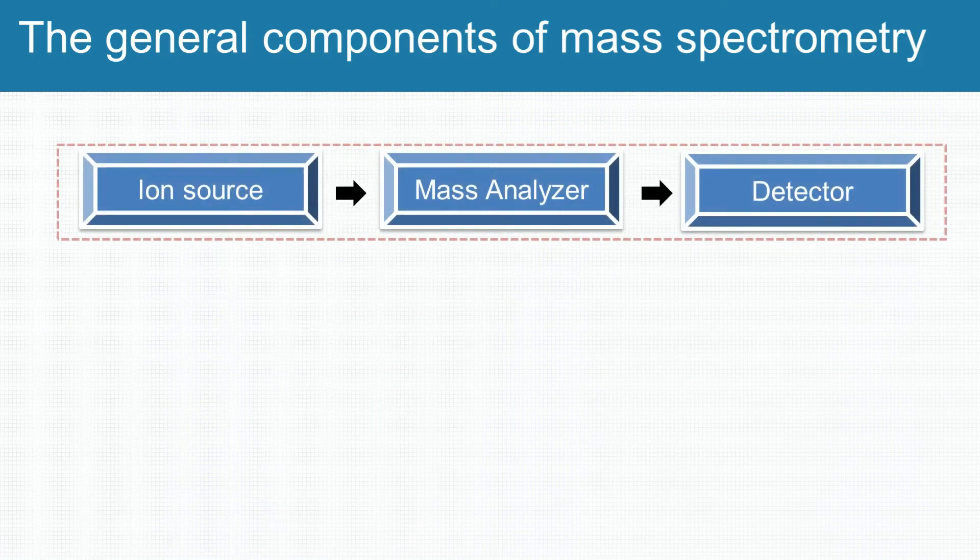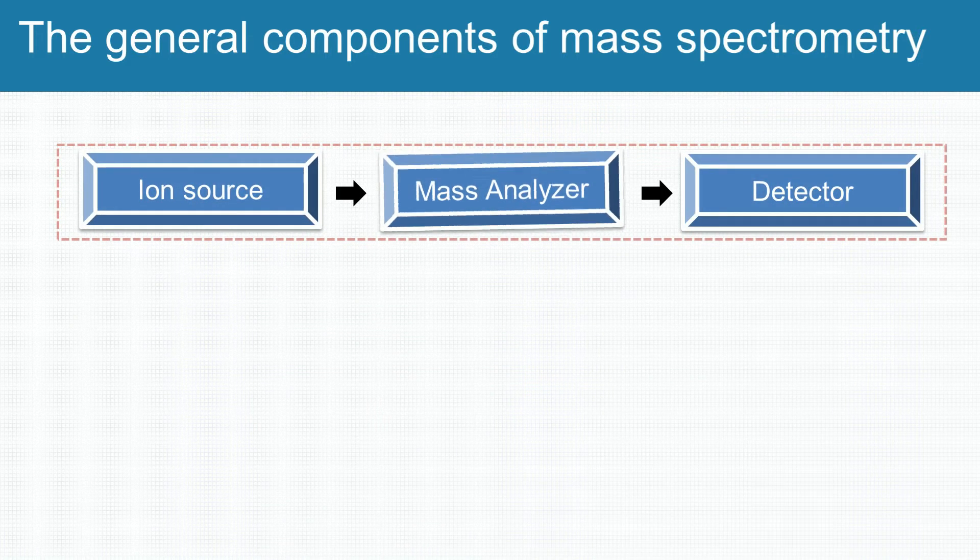A mass spectrometer consists of three main components: the ion source, the mass analyzer, and the detector.